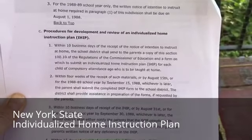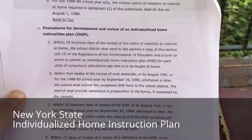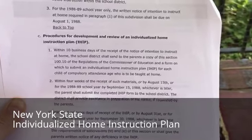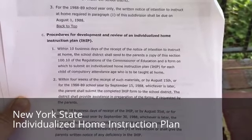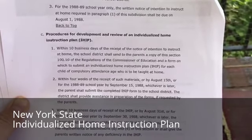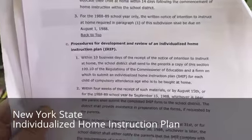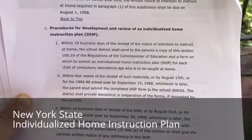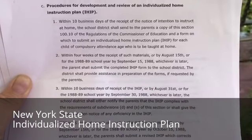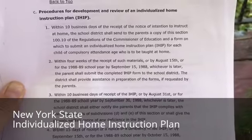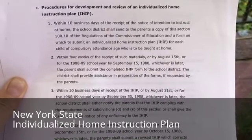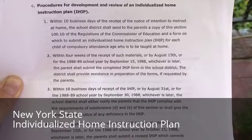Here is what the homeschool regulations actually say. Within 10 days of the receipt of the notice of intent to instruct at home — that's your letter of intent — the school district shall send the parents a copy of this section. You can also find this online if you haven't received this yet. Within four weeks of the receipt of your packet of materials, or by August 15th, whichever is later, the parent shall submit the completed IHIP form to the school district.